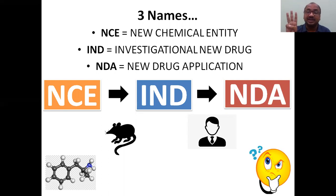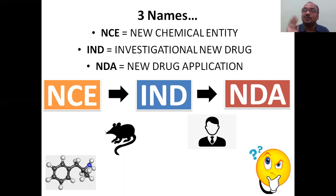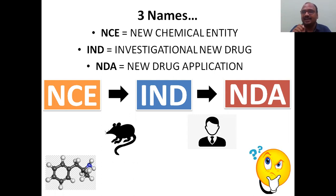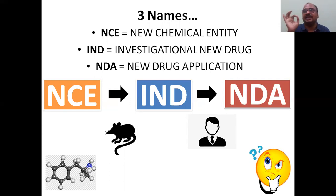These three names are very basic. See here — first one: New Chemical Entity. We are not calling it as a drug. Second line, drug is there. Third name, drug is there. First one, there is no word of drug — Chemical Entity. We are just calling it as a chemical, New Chemical Entity. I will explain what is NCE.